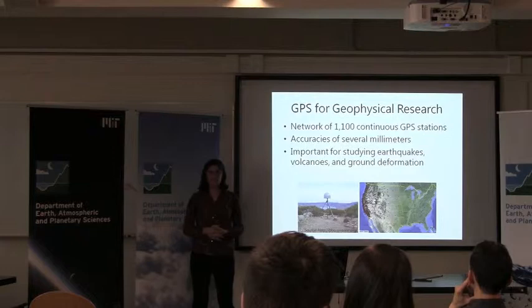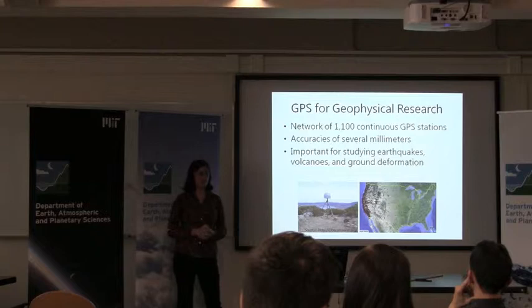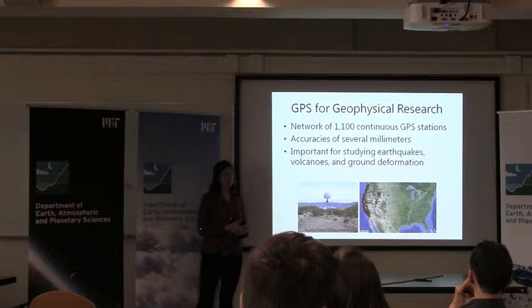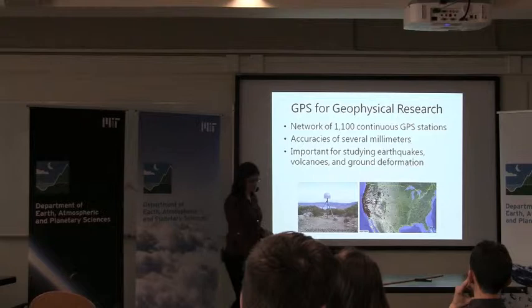For background, in the United States we use GPS for a lot of applications in geophysical research. There's a network of about 1,100 continuously operating stations in the United States, and these stations can produce position estimates with accuracies of several millimeters. This data is useful for scientists who study earthquakes, volcanoes, ground deformation, and many other applications.